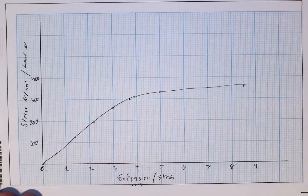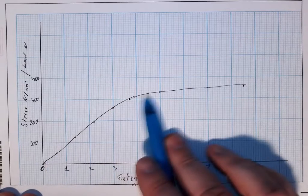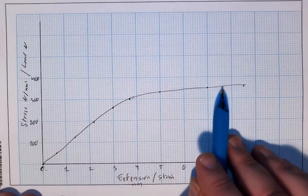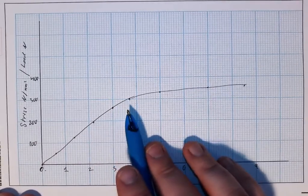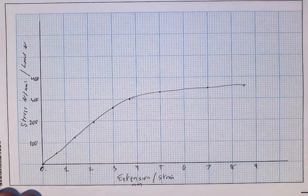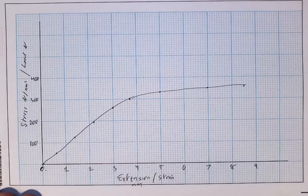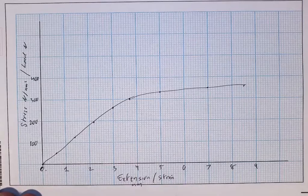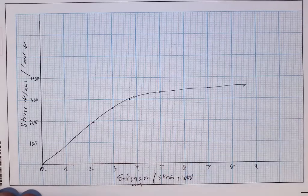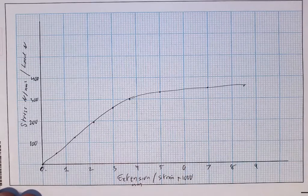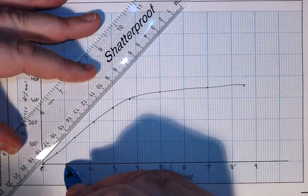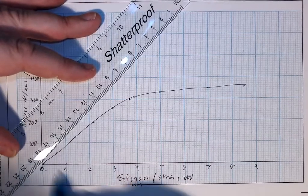Now the problem we have here is we have an elastic portion of the graph which is roughly down around here somewhere. You have your plastic portion of the graph which is roughly up here somewhere. With some graphs it's very easy to tell where that point is. This is not that straightforward. So what they developed is what's known as proof stress. At 0.1% proof stress, and by the way this is strain multiplied by 1000, you draw a line from 1. So 0.1% proof stress if it's multiplied by 1000 gives us 1.